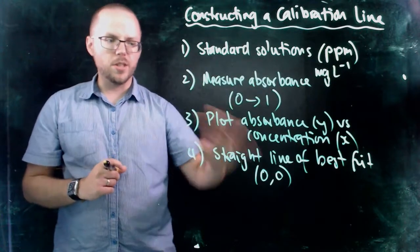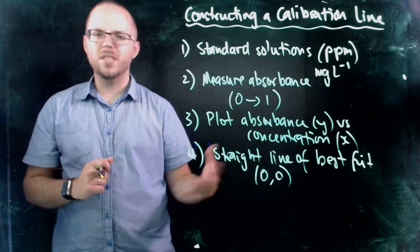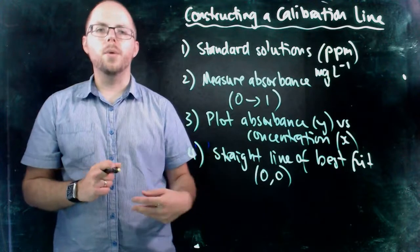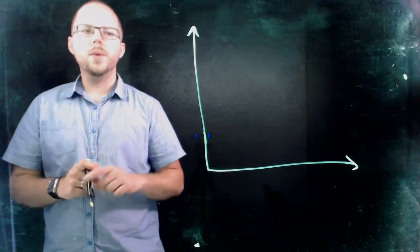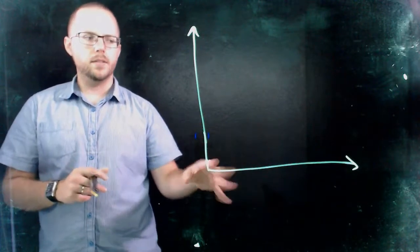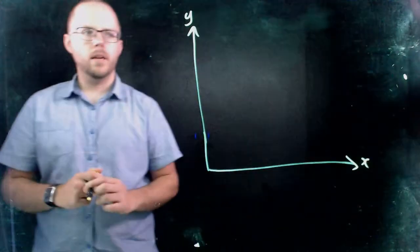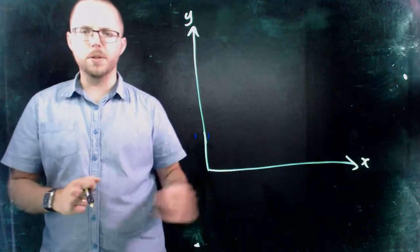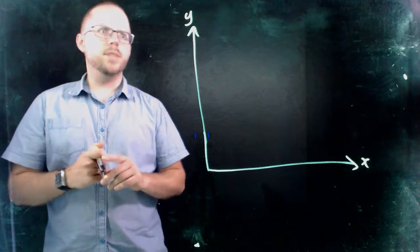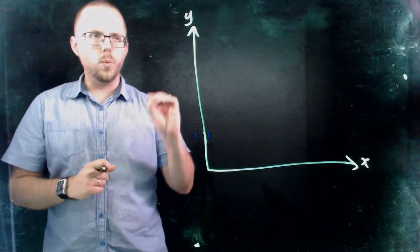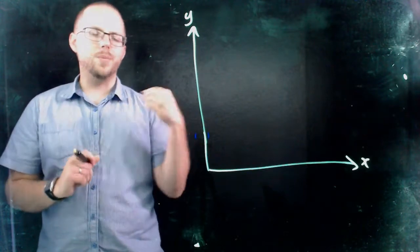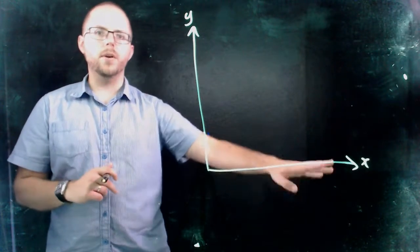So I'm going to demonstrate to you just on a simple set of axes how we might go about doing this. So here we have our sample set of axes, our y-axis and our x-axis. If you don't know that x and y are those ones by now, go back to junior school geometry. And so what we have here, we've set up our samples and we've measured the absorbance, and now we're going to plot a line.